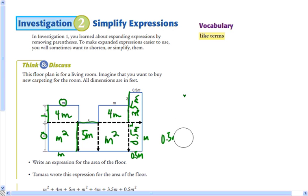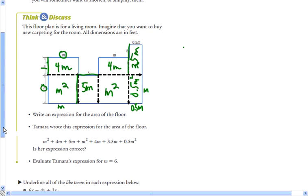Okay, so Tamara wrote this expression for the area of the floor. Is her expression correct? And just looking at what we got, right here's an m squared. Tamara has an m squared. Here's another m squared. We have a 4m here, 4m here, 5m, 5m, 4m, 4m, 3 and a half m up here, 3 and a half m there. And this part right here is 0.5m squared.